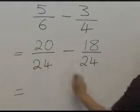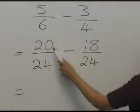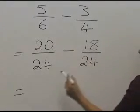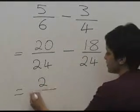Now we're subtracting the two fractions, so we just work with the tops, the numerators, so 20 take away 18 is 2 over 24.